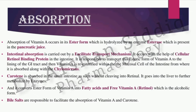As far as beta-carotene is concerned, it is absorbed from the small intestine without being cleaved into retinol, and it goes into the liver for further metabolism. It is then circulated throughout the body with the help of retinol binding protein. Being a fat-soluble vitamin, bile salts are also very important in facilitating the transport and absorption of vitamin A.